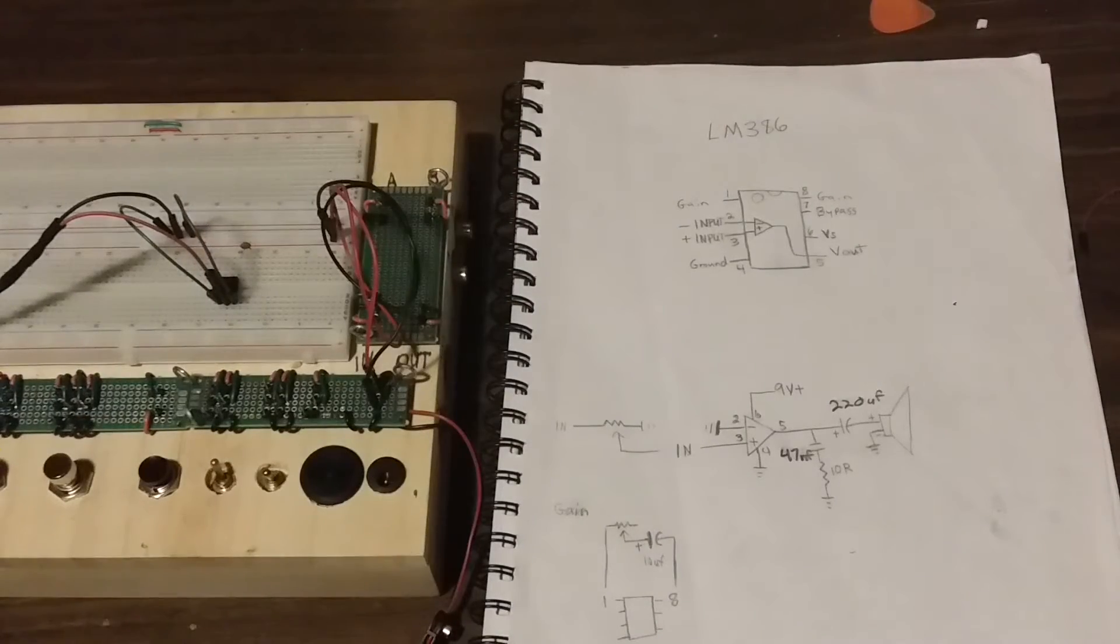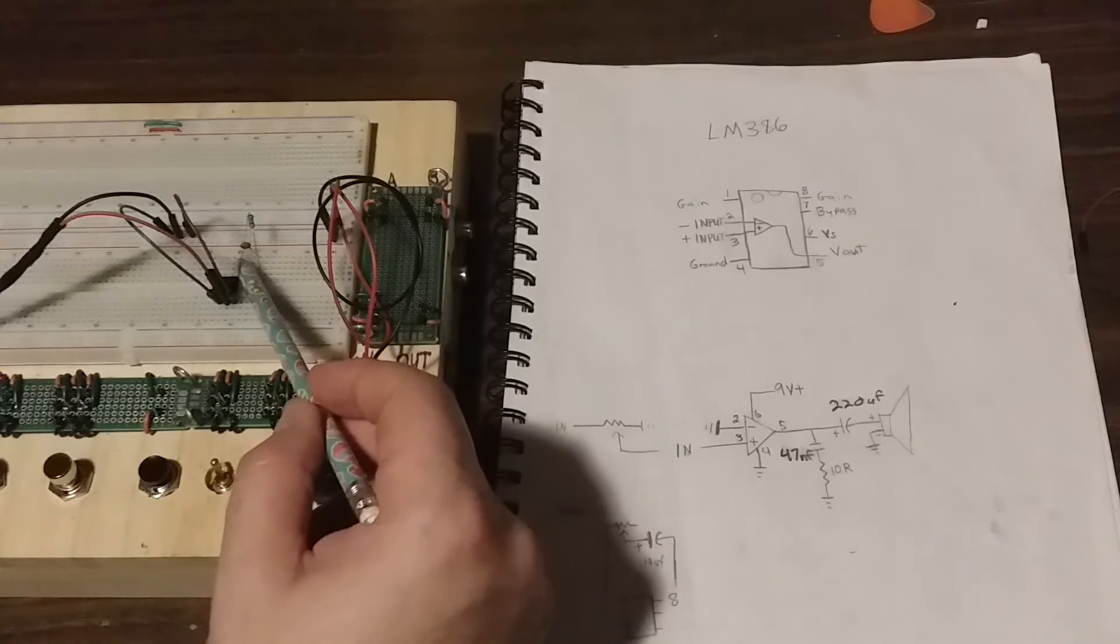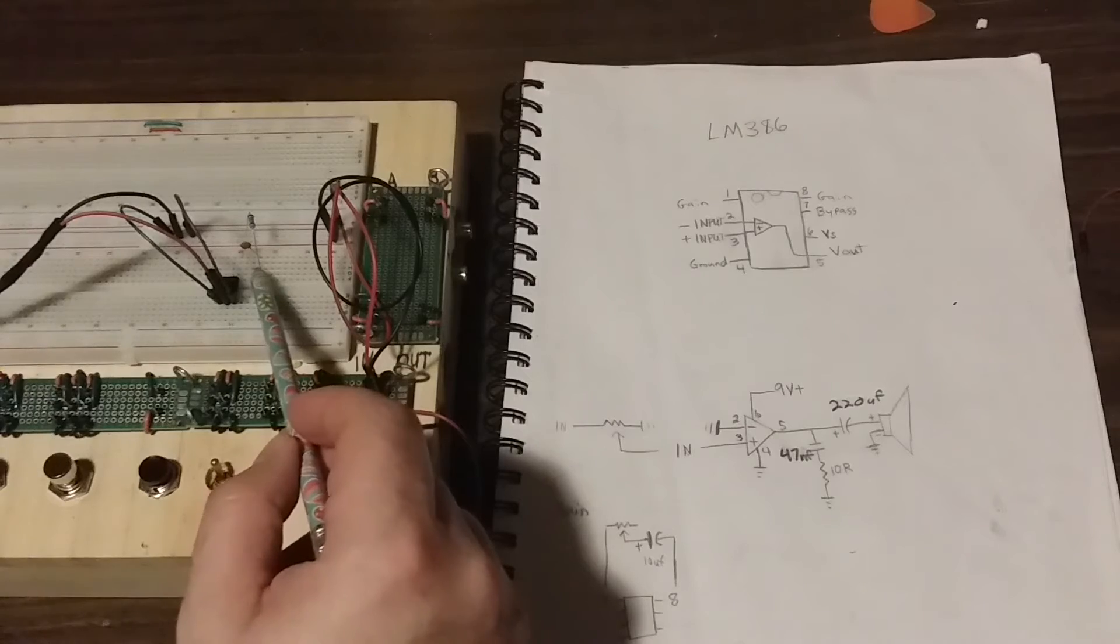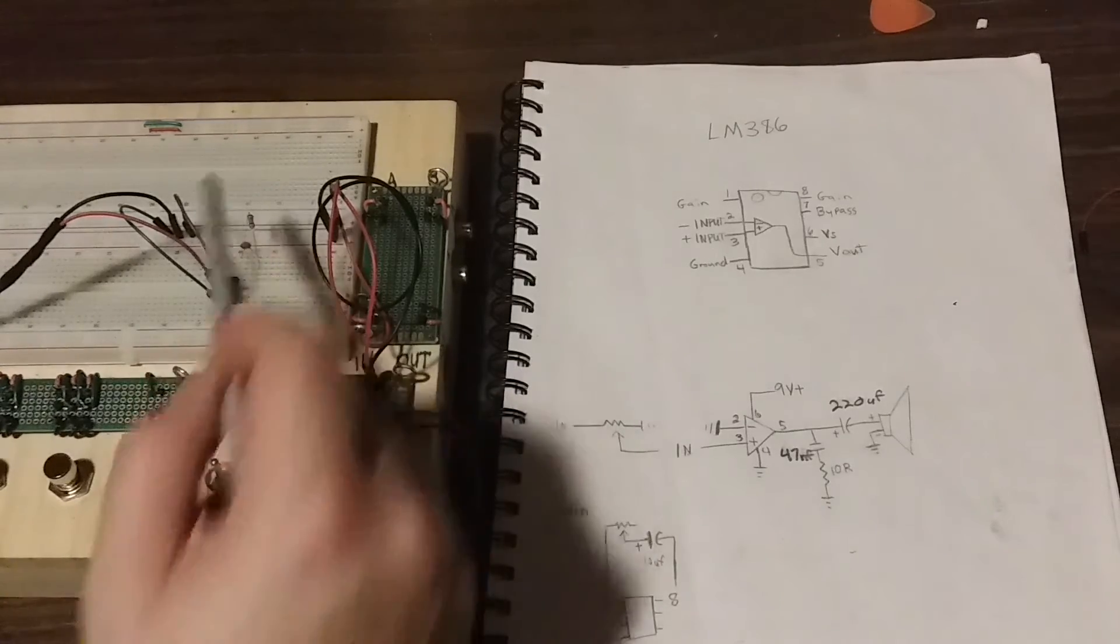One of the leads is now plugged into pin number 5. The other lead is plugged into an empty rail. This is where we're going to plug our 10 ohm resistor into. So now, just like the schematic, you can see pin 5 goes to the 47 NF capacitor, which goes to this rail here, which has the 10 ohm resistor, which goes to ground.